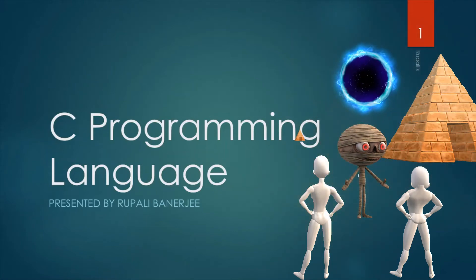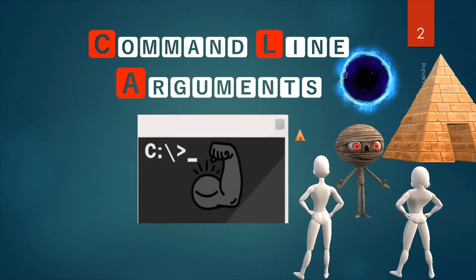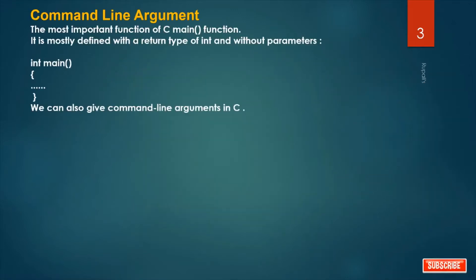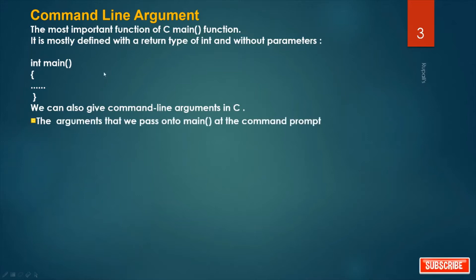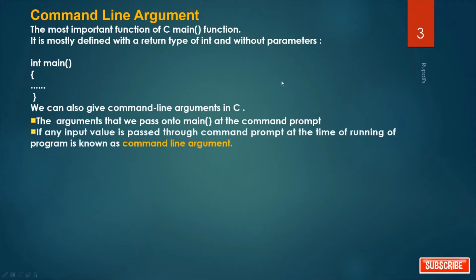Today our topic is command line arguments. What is a command line argument? We know that the most important function of C is the main function. The arguments that we pass on to main at the command prompt are called command line arguments. If any input value is passed through the command prompt at the time of running the program, it is known as a command line argument.